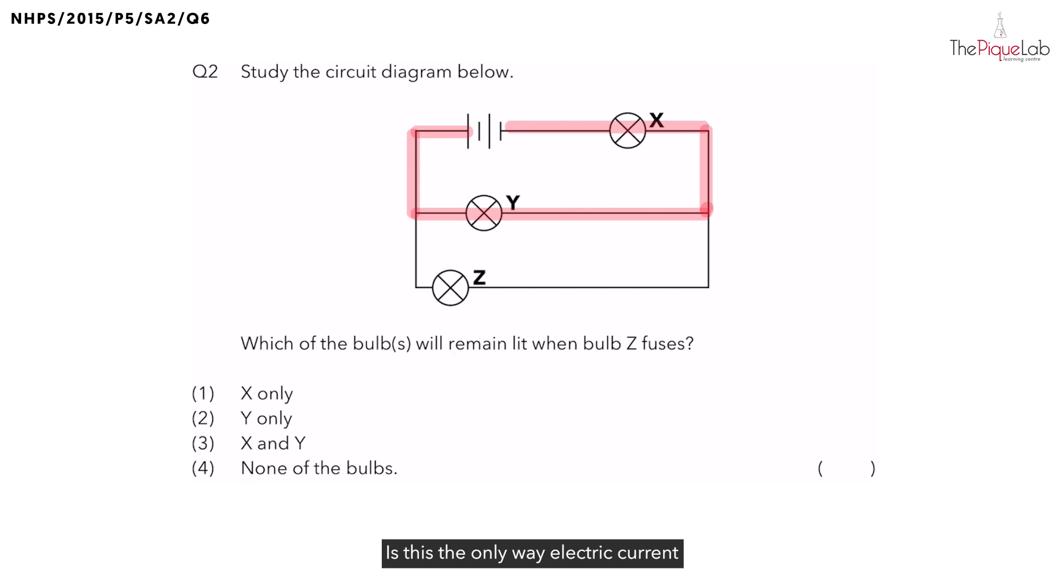Is this the only way electric current can flow through this circuit? No. We see that there is another possible circuit electric current can take. So let's take a highlighter of a different color to trace this other circuit. Electric current will flow through the wires, through bulb Z, and return to this other terminal of the battery over here.